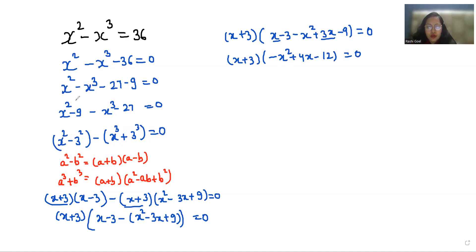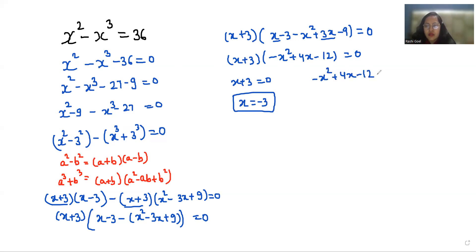So we have two roots. First, x plus 3 equals 0, giving x equals negative 3. And from the second factor, negative x squared plus 4x minus 12 equals 0. Multiplying both sides by negative 1 gives x squared minus 4x plus 12 equals 0.